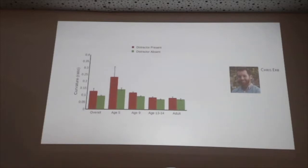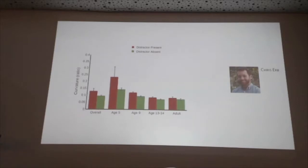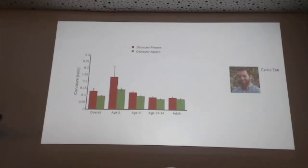Even if you remove outliers using a standard iterative trimming procedure, there's still a significant effect of distractor presence for five- and nine-year-olds, which pretty much fades as people get older. So you see this developmental trajectory: in younger children, salient distractors have a profound impact on the path of the movement, but not on how quickly you start. As you get older, those effects go away. I should note there are task-specific factors — this is just a first step.